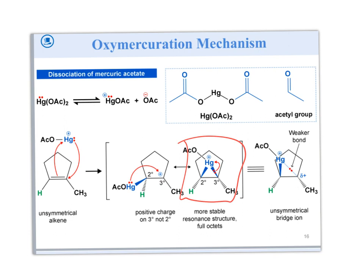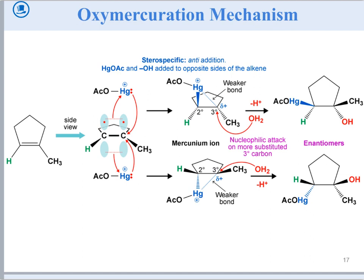When the mercury adds, you have two different types of carbons: a secondary carbon and a tertiary carbon. The weaker bond — the more reactive site — is the tertiary one, because that's more delta-plus. Even though there are no carbocations, think of the more substituted carbon as the position where the solvent is going to react. The solvent does an SN2-type reaction there.